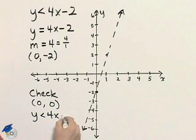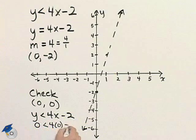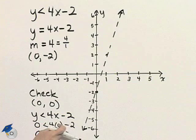to see if it creates a true or false statement. So substituting 0 in for y and x gives us 0 less than 0 minus 2 is negative 2. So the question is: is 0 less than negative 2?